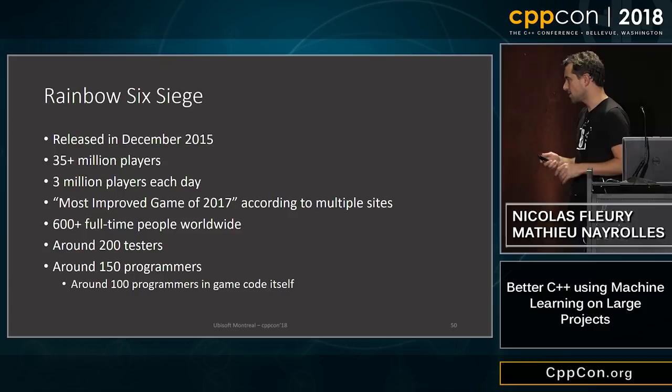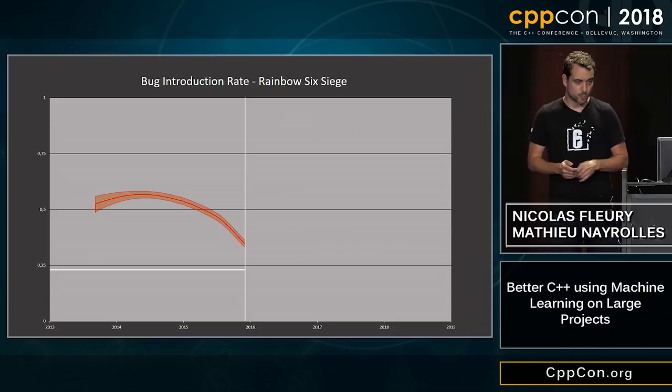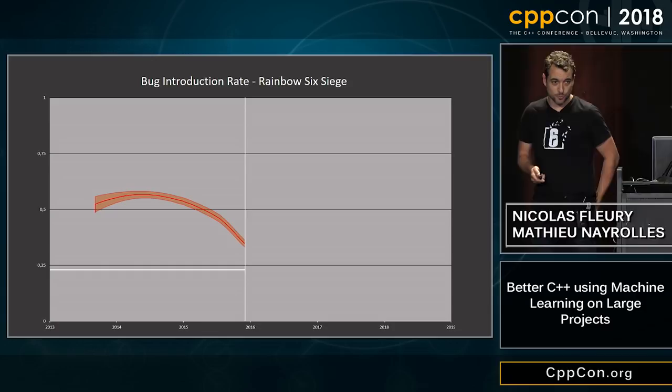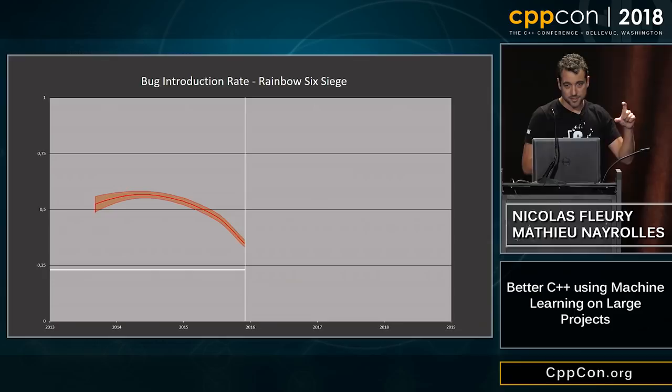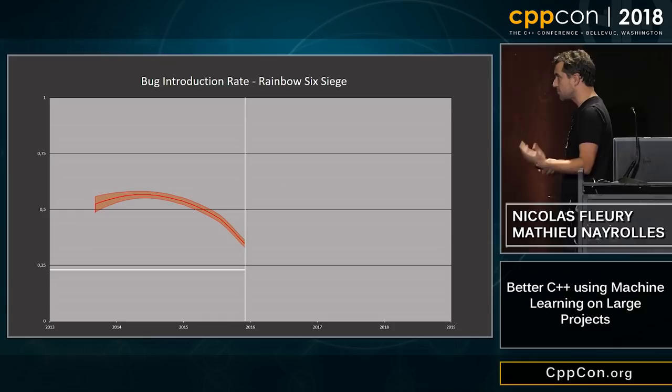During production of Rainbow Six Siege, our bug introduction rate was around 50% — meaning for every two commits, we introduced on average one more bug entry in the database. It's possible for a single commit to introduce multiple bugs. For crashes, we use part of the call stack as an ID, and sometimes the same crash results in multiple crash IDs. Also, some bugs in video game development are normal iterative work — like 'the shooting for that character doesn't feel right.'